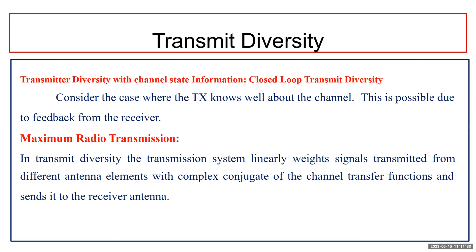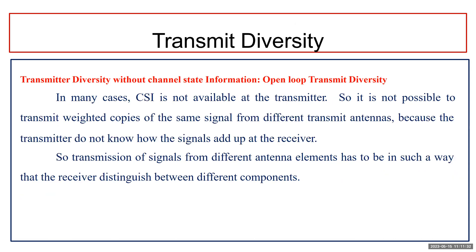The second condition is transmit diversity without channel state information, where the channel is not known to the transmitter. We cannot simply transmit weighted copies of the same signal from different transmit antennas, because we cannot know how they will add up at the receiver since the channel response is unknown.